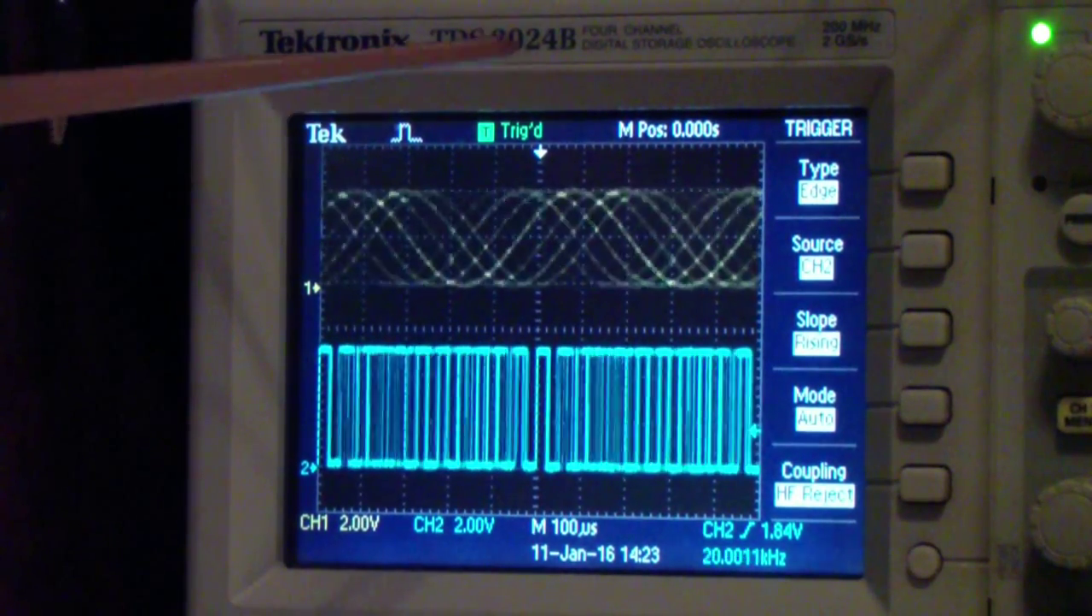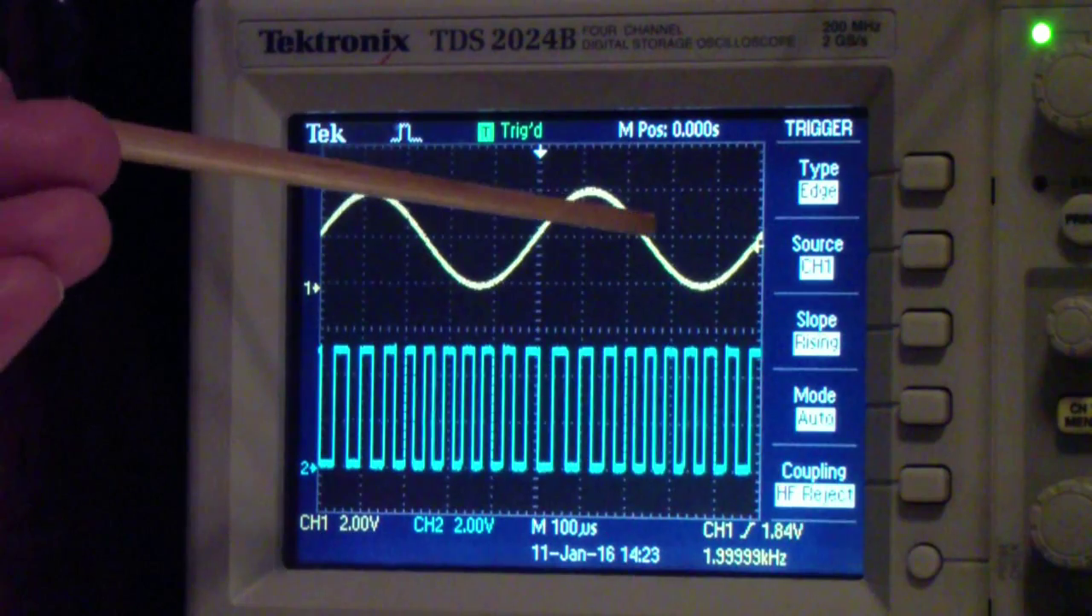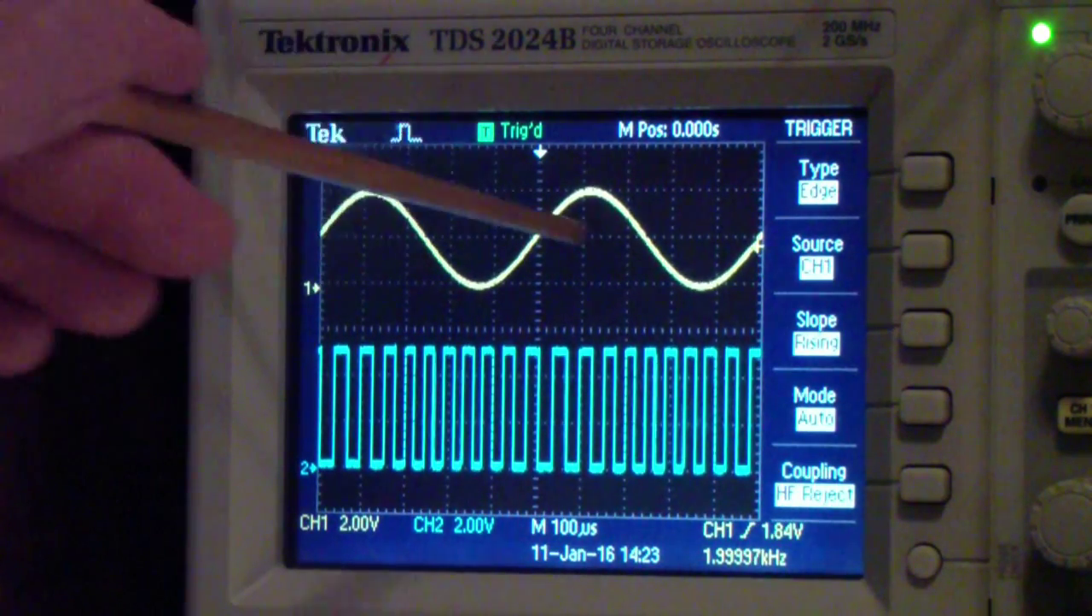You see it up at the top. You may notice the carrier is being shifted. I'm going to switch the trigger to channel 1, the intelligence signal. As the intelligence signal is varying, so is the position or phase of the carrier. More importantly, the width of the carrier pulses are varying.